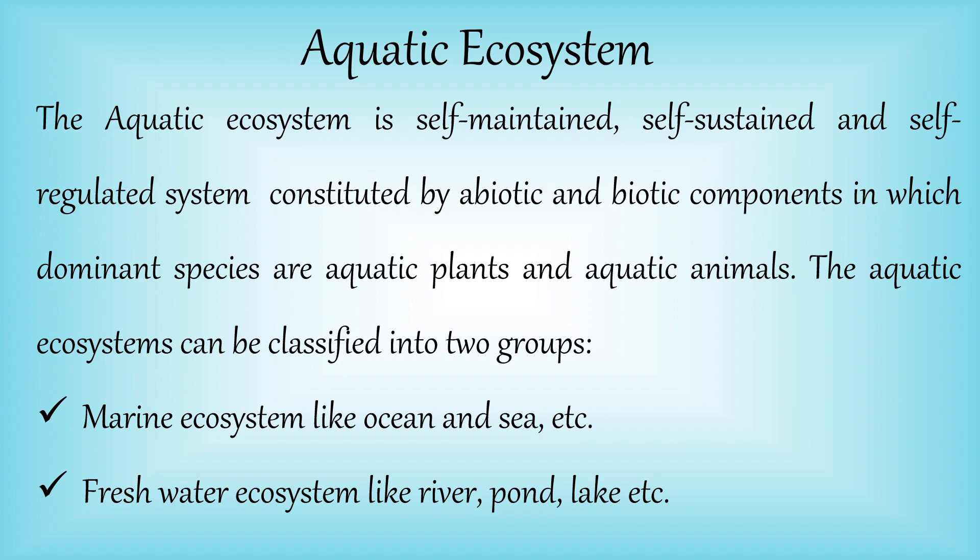Aquatic ecosystems can be classified into two groups: mainly marine ecosystem and freshwater ecosystem. Marine ecosystems are those ecosystems in which water is salty in nature, like ocean, sea etc. In freshwater ecosystems, water is fresh, like in rivers, ponds, lakes etc.